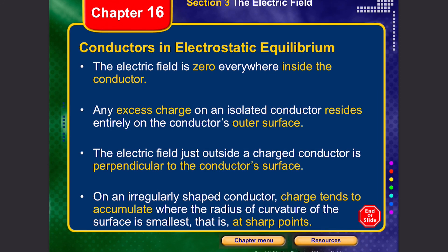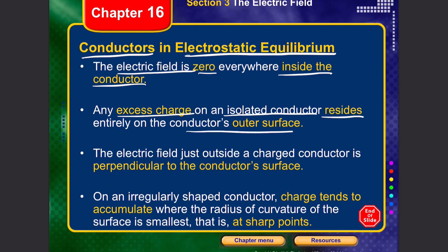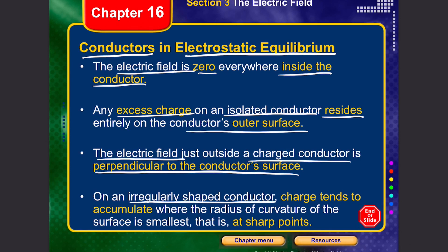Finally, let's discuss conductors in electrostatic equilibrium. In electrostatic equilibrium: the electric field is zero everywhere inside the conductor; any excess charge on an isolated conductor stays on the outer surface; the electric field just outside a charged conductor is perpendicular to the conductor's surface; and for an irregularly shaped conductor, charge accumulates at the sharpest points — where the radius of curvature is smallest. This concludes our lecture on the electric field.